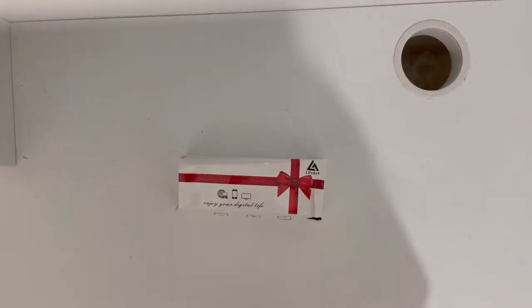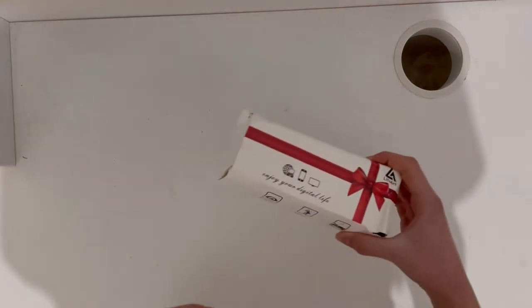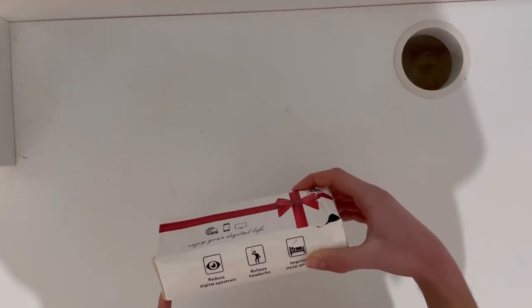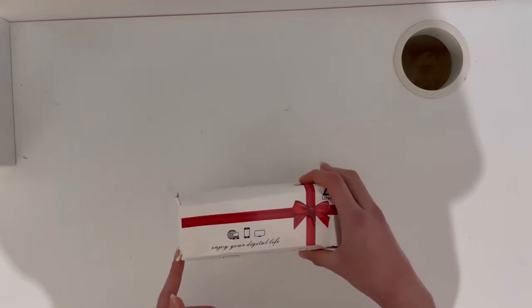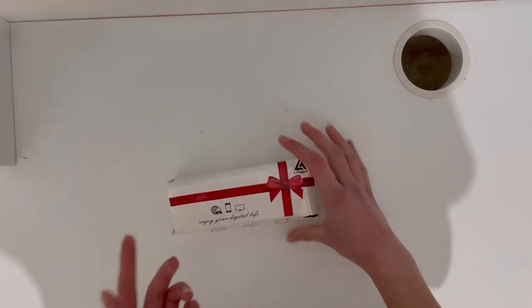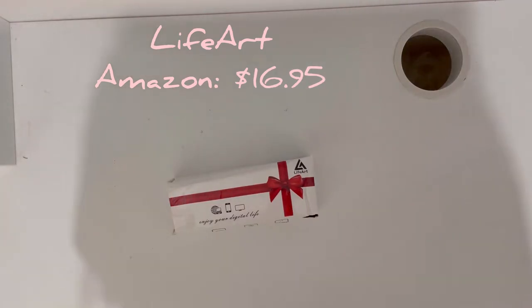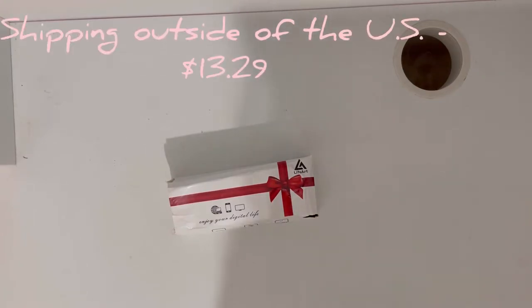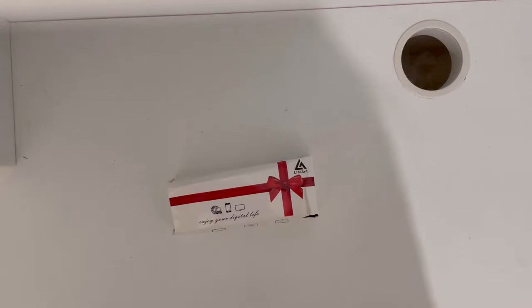Okay guys, so these are the blue light glasses that I got. The box did come a little squished, and I just really hope that the glasses themselves aren't broken. I got this off of Amazon. It was $16.95. They're the Life Art Blue Light Blocking Glasses. You do want to get it shipping out of the U.S., I think it's about $13. So let's get it open.